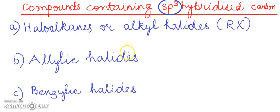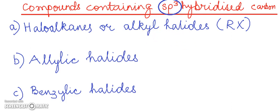Let us first learn about the compounds containing the sp3 hybridized carbon atom. In this category we have the haloalkanes or the alkyl halides. The haloalkanes or alkyl halides are the halides in which the halogen atom is bonded to the alkyl group.